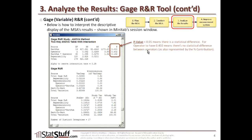Similar to the p-value used in many other statistical studies in Minitab, the p-value represents the amount of risk we're looking for, compared to our alpha risk, which by default is 5%. If the p-value is less than 5%, there is a statistical difference. For an operator p-value of 0.402%, that means there's no statistical difference between the operators.